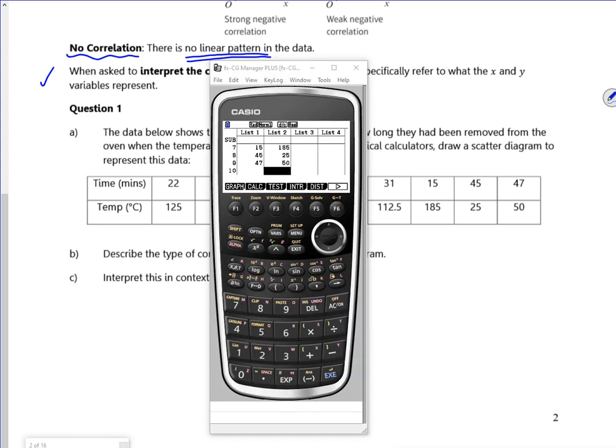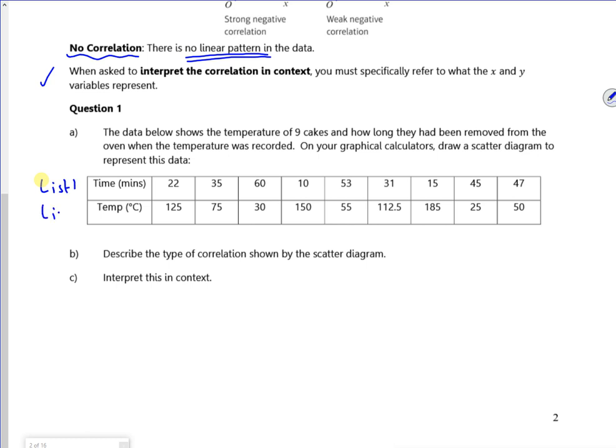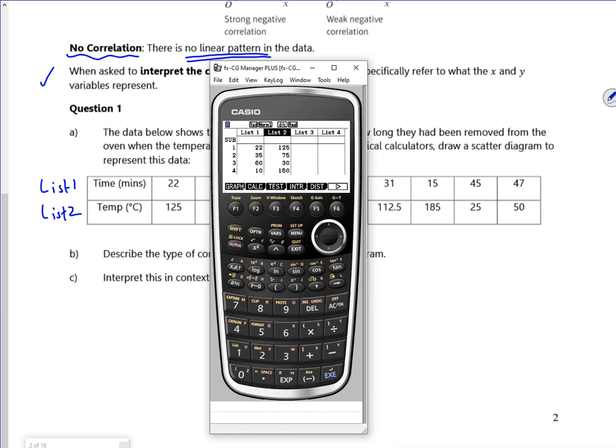So to save time, I've entered the numbers. So in list 1, I've got the time. And in list 2, I've got the temperature. So I've entered the numbers. You've got F1 to graph. And then just graph 1, F1 again. And you can see from the graph that you've got a negative correlation.